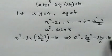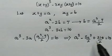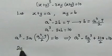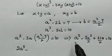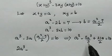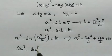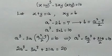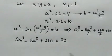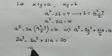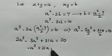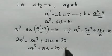Now multiply both sides by 2. We get 2a cubed minus 3a cubed plus 21a equals 20. Simplifying, we have negative a cubed plus 21a minus 20, which is equal to 0.